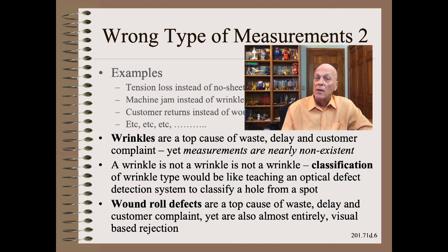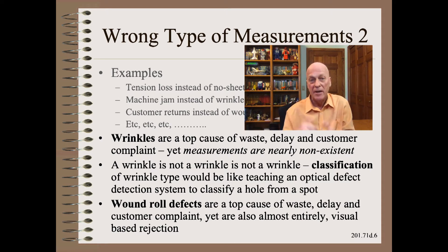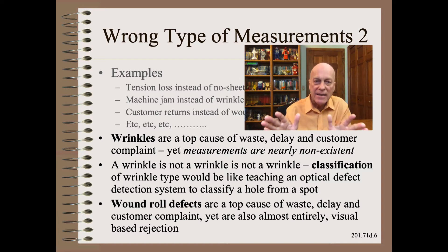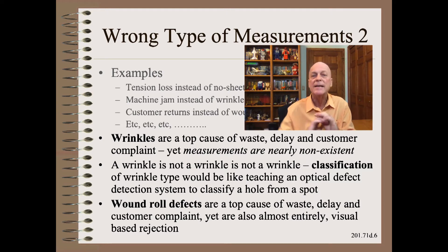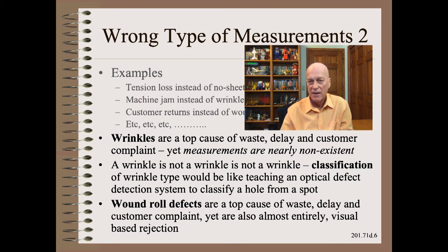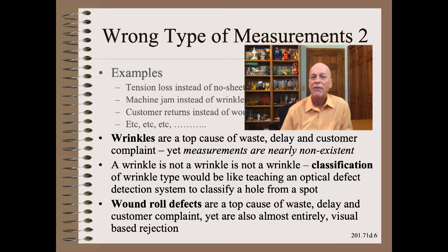Wrinkles and wound roll defects are easily in the top three causes of waste, delay, and customer complaints in the web industries, yet objective measurements of these troubles are nearly non-existent. To compound our troubles, as documented in the web handling handbook, a wrinkle is not a wrinkle is not a wrinkle. There are perhaps as many as 20 distinctly different defects that people call wrinkles, each with totally different mechanics and, more importantly, totally different sets of remedies. So even if you counted wrinkles, you would be mixing together totally unrelated defects in the same bin.